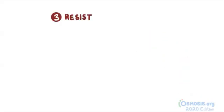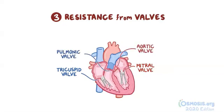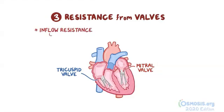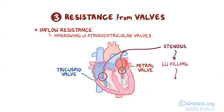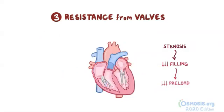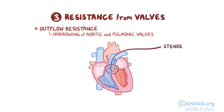Next is resistance from valves. Inflow valves include the mitral valve on the left and the tricuspid valve on the right; outflow valves connect the ventricles to the aorta and pulmonary artery. Inflow resistance from narrowing of atrioventricular valves — such as mitral or tricuspid stenosis — decreases ventricular filling and therefore decreases preload. Outflow resistance from narrowing of the aortic or pulmonic valves — such as aortic or pulmonary stenosis — decreases ventricular emptying, thereby increasing preload.